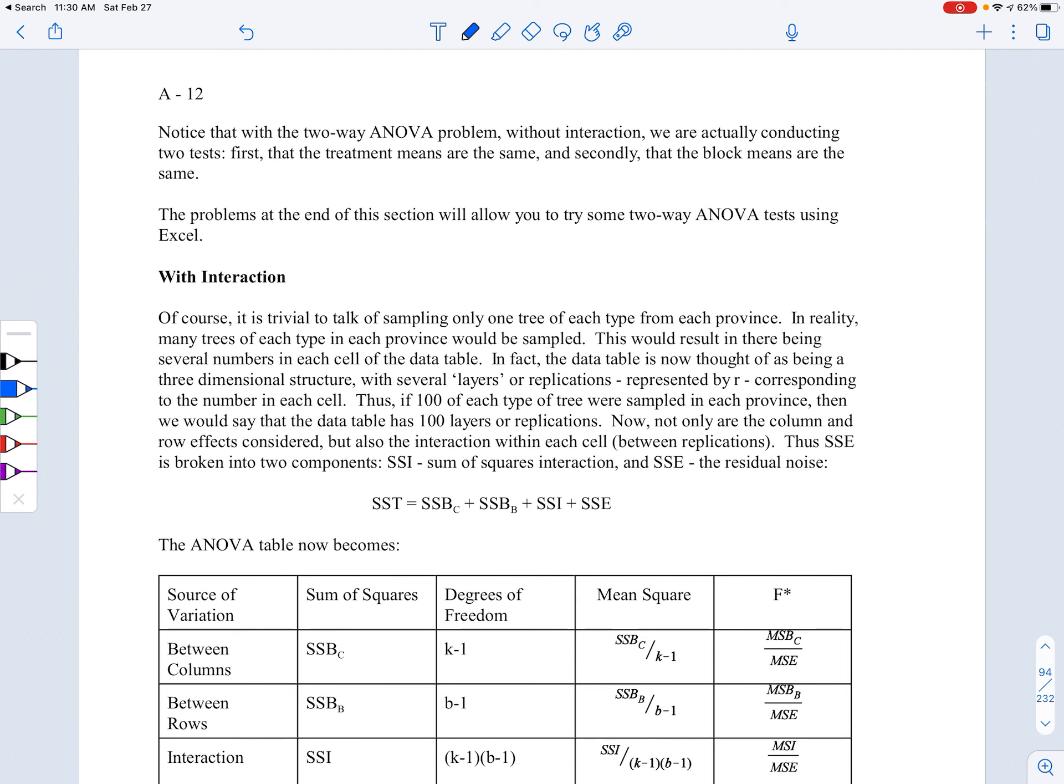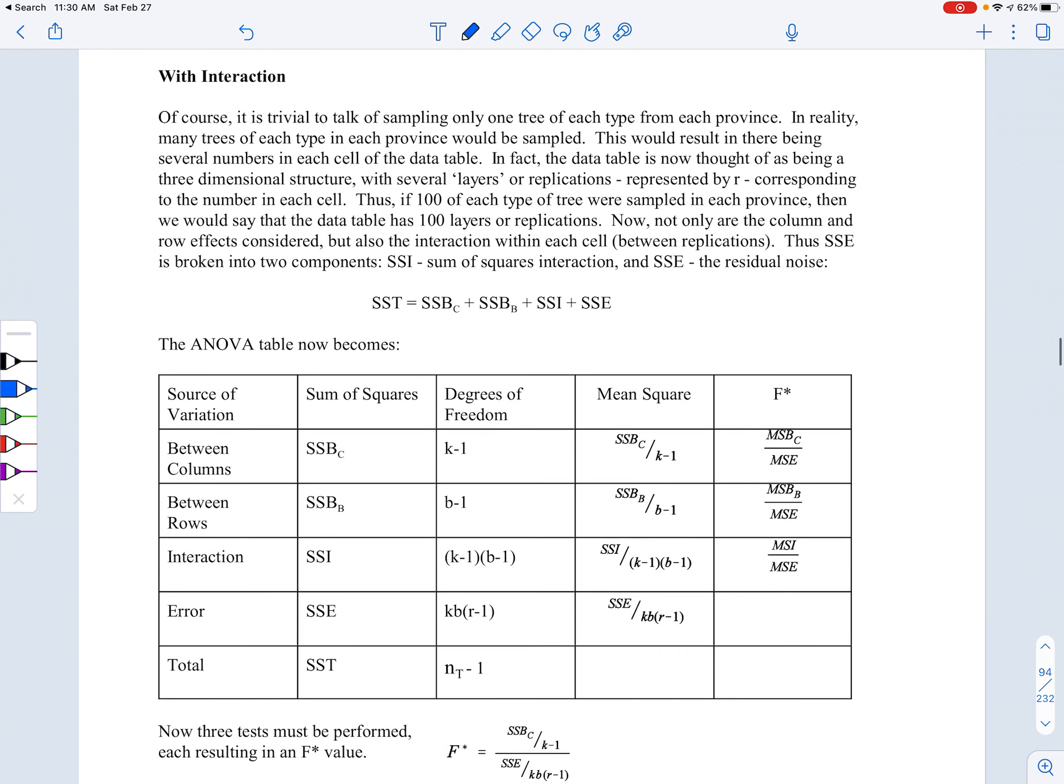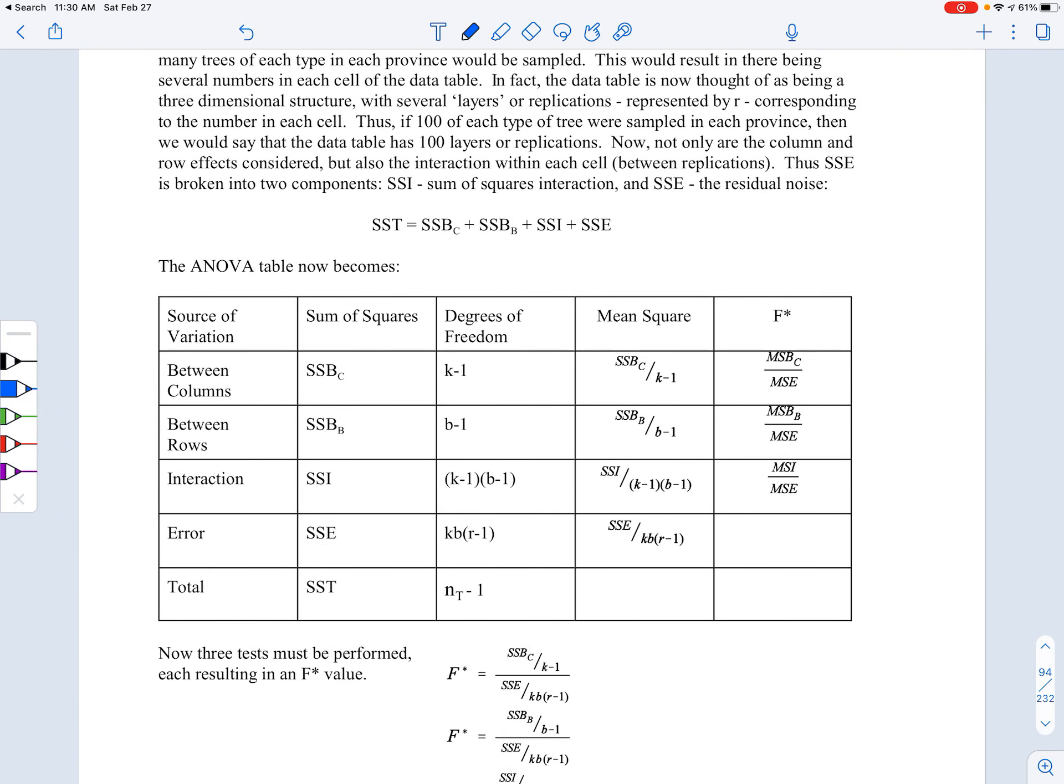That's something that we call here an ANOVA problem with interaction. What we do in that particular case then is we've got our SST equals our SSB columns, that's our original SSB, and then the SSB for the blocks, and then we take that SSE and we split it into two terms: SS interaction to take into account that we've got 40 pine trees or so, and then whatever is left over from there.